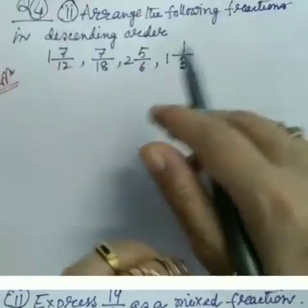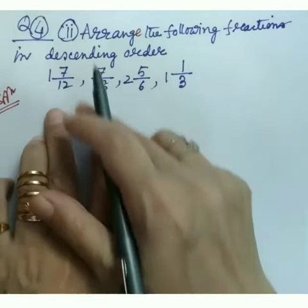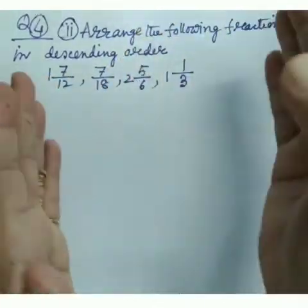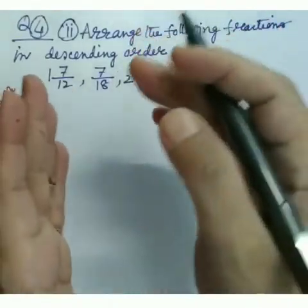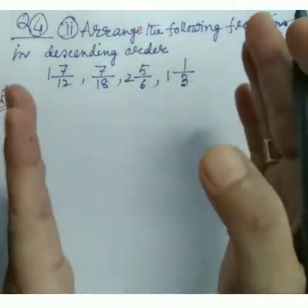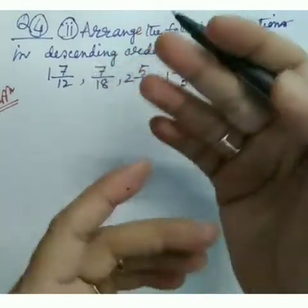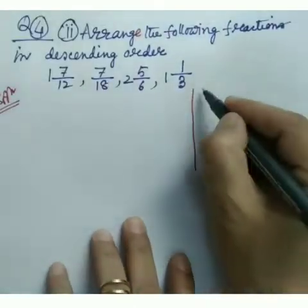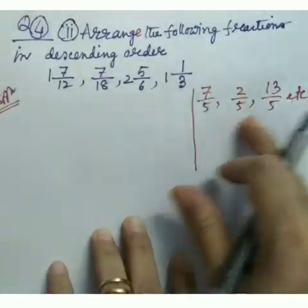Now question number four: arrange the following fractions in descending order — 1 and 7/12, 7/18, 2 and 5/6, 1 and 1/3. Unlike regular numbers, it's not always easy to tell which fraction is bigger just by looking at them. When two or more fractions have the same denominator — called like fractions — comparison is easy. For example, 7/5, 2/5, 13/5 are like fractions with a common denominator.